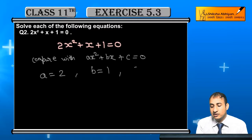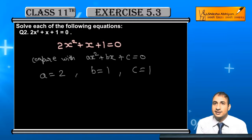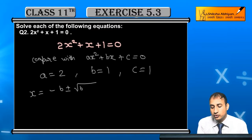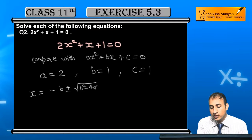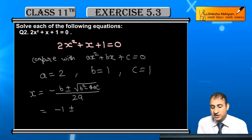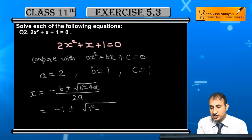Now students, x equals minus b plus or minus square root of b² minus 4ac over 2a. That is minus 1 plus or minus square root of 1² minus 4 times 2 times 1, divided by 2 times 2.